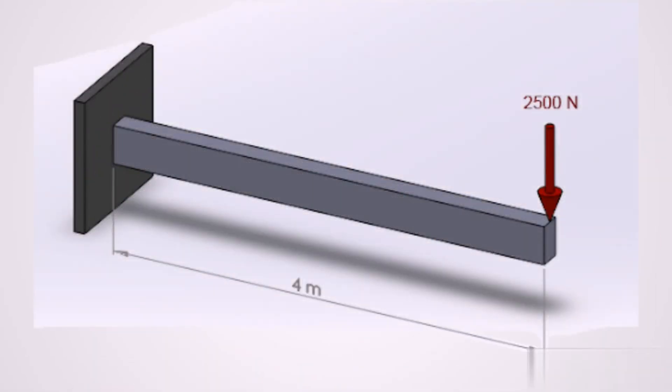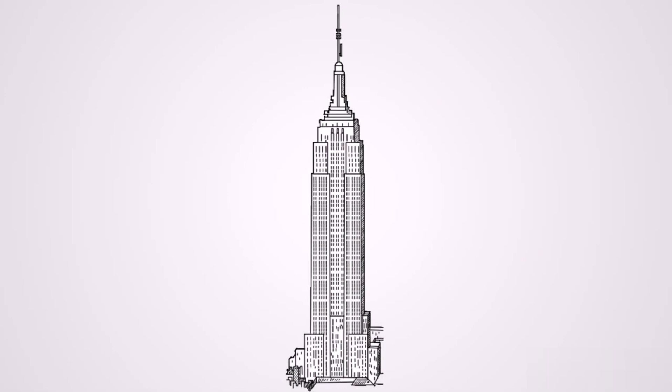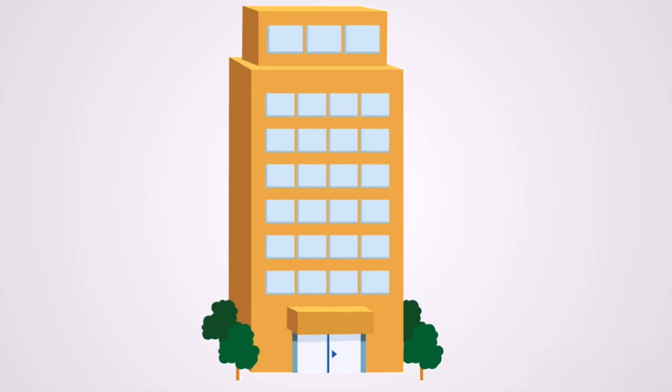P-delta analysis usually comes into play when we have larger deflections in the structure. An example would be a multi-story frame that has a lateral load acting on the structure, and it is pushing the structure sideways and also have a gravity load acting downward by taking a look at this image.